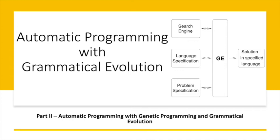Hi everyone, this is another video on the topic of modern optimization. It is also part two of the last video on automatic programming of computers with genetic programming and grammatical evolution. This part two will introduce a famous automatic programming algorithm called grammatical evolution. A big issue when evolving computer programs automatically is that grammatically or syntactically invalid instructions can be generated. Grammatical evolution takes care of that.